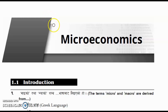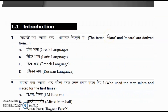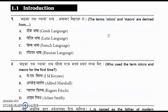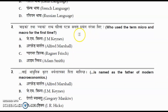Hello everyone, today we'll discuss a few MCQs relating to microeconomics. Question number one: the term 'micro' and 'macro' are derived from which language? The options are Greek, Latin, French, and Russian. The correct option is option A, Greek language.